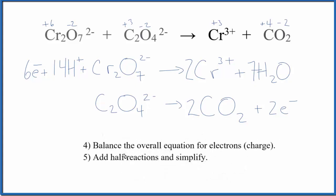Now we balance the overall equation for electrons. These are the reactants. In the products we have two electrons, in the reactants we have six. That's not balanced, so we need to balance that.